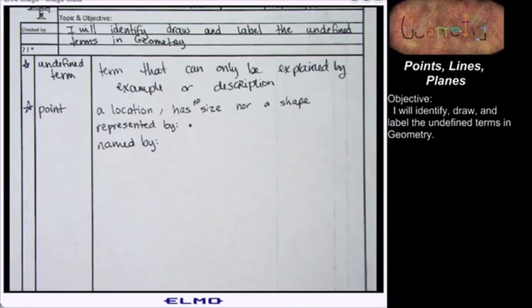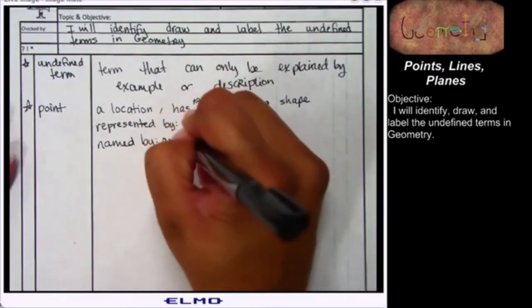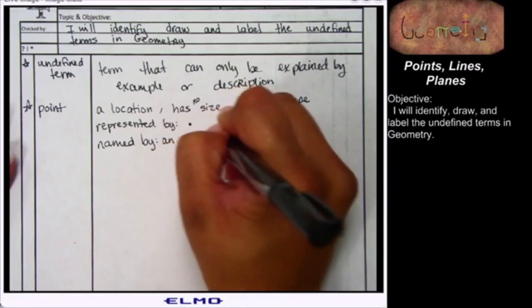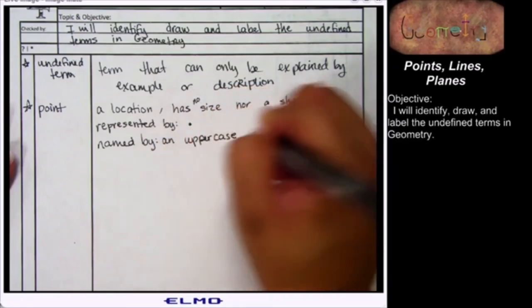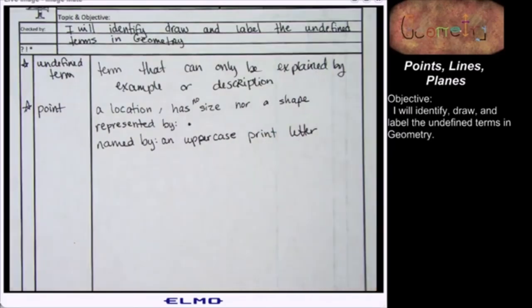Points have their own names that they want to be called by. A point must be named by an uppercase print letter. Any letter you like.